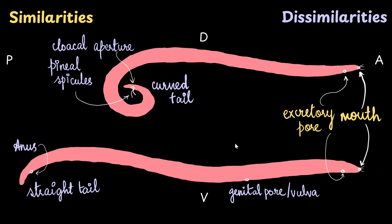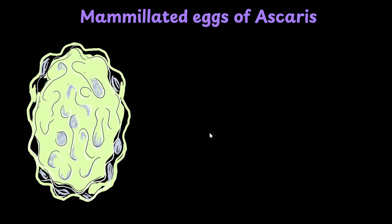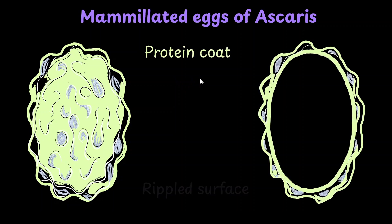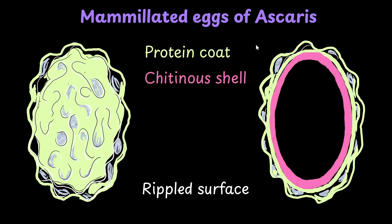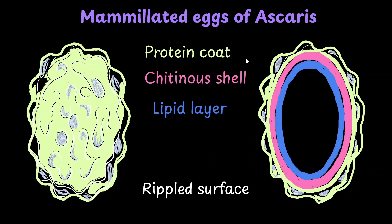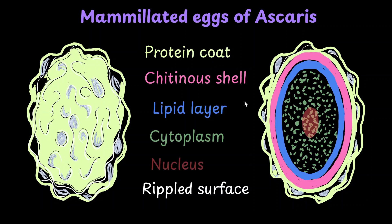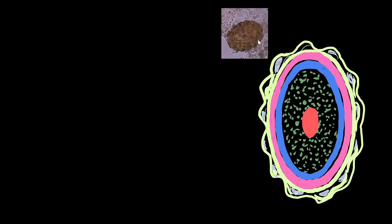When these worms mate, the fertilized egg produced is called the mammillated egg of Ascaris. From the outside, the textured appearance of the egg is due to the protein coat, and this appearance is called the rippled surface. Just below the protein coat there is a chitinous shell, and below that there is a lipid layer, like a plasma membrane, within which you can find the cell. These are the eggs which pass out along with fecal matter, and this is how the egg looks under a microscope.